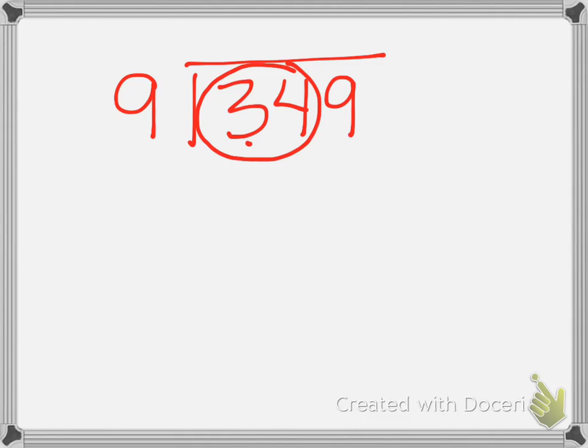And this time we're just looking at it as 34 tenths. I know 9 times 3 is 27, and that's as close as I can get. So I'm going to put my 3 above. I'm going to multiply 3 times 9 is 27, and then I'm going to subtract the hundreds here, and I'm going to have 7 left over.